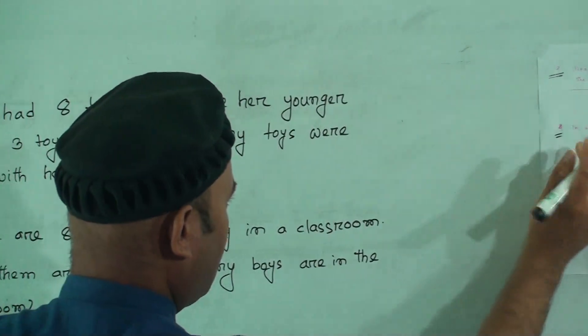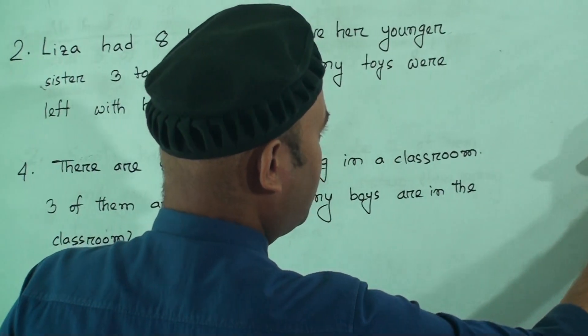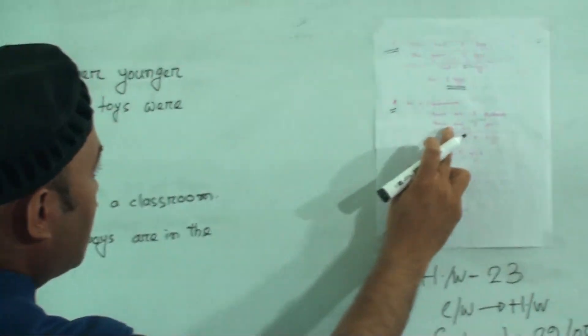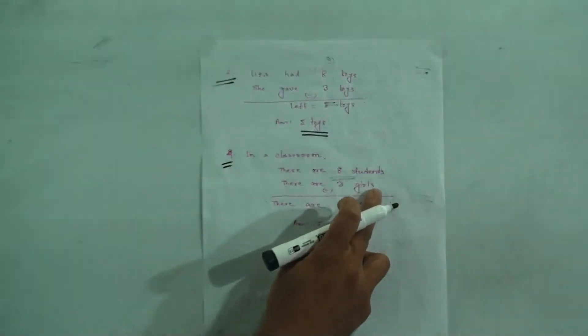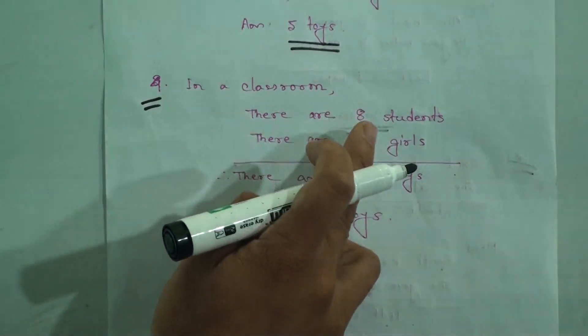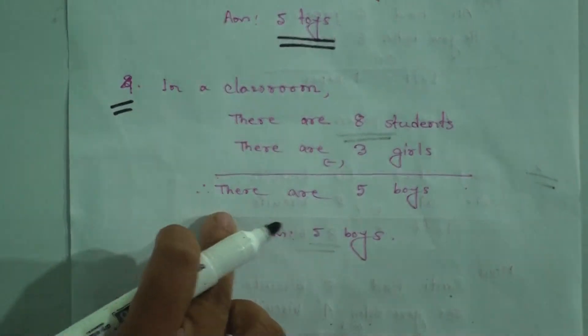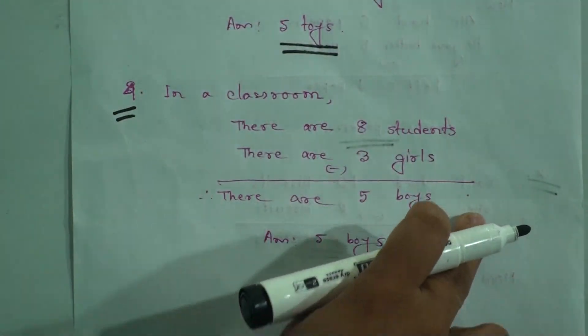In a classroom, there are eight students and there are three girls. Now subtract three from eight, similarly as the last one. Three from eight is five, so there are five boys.